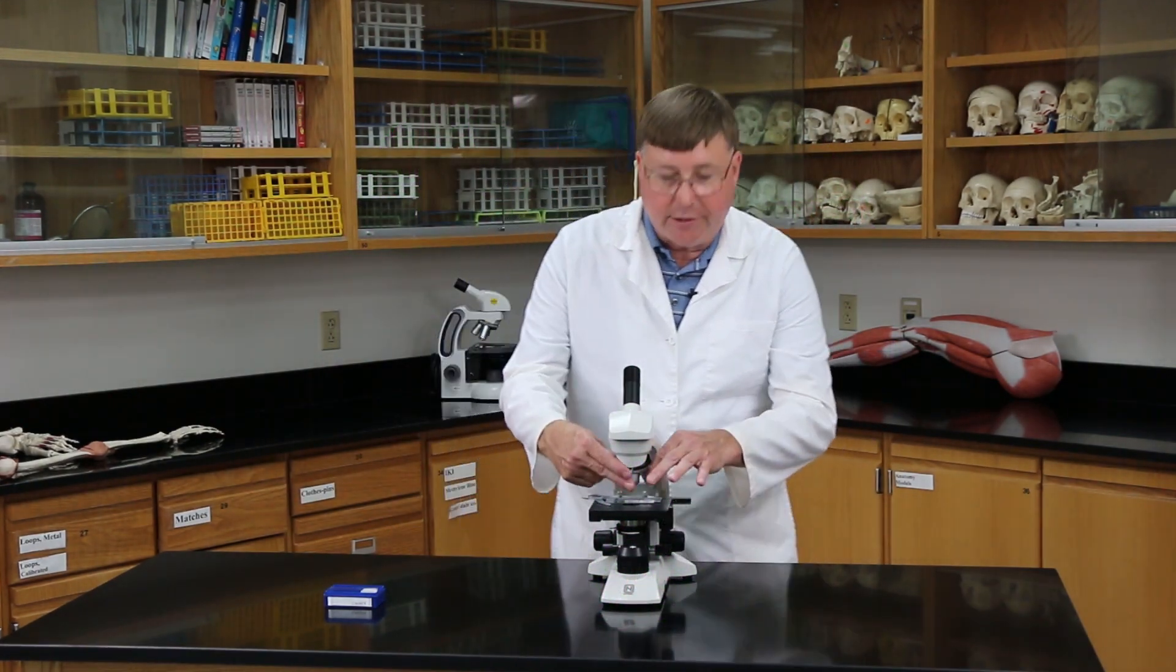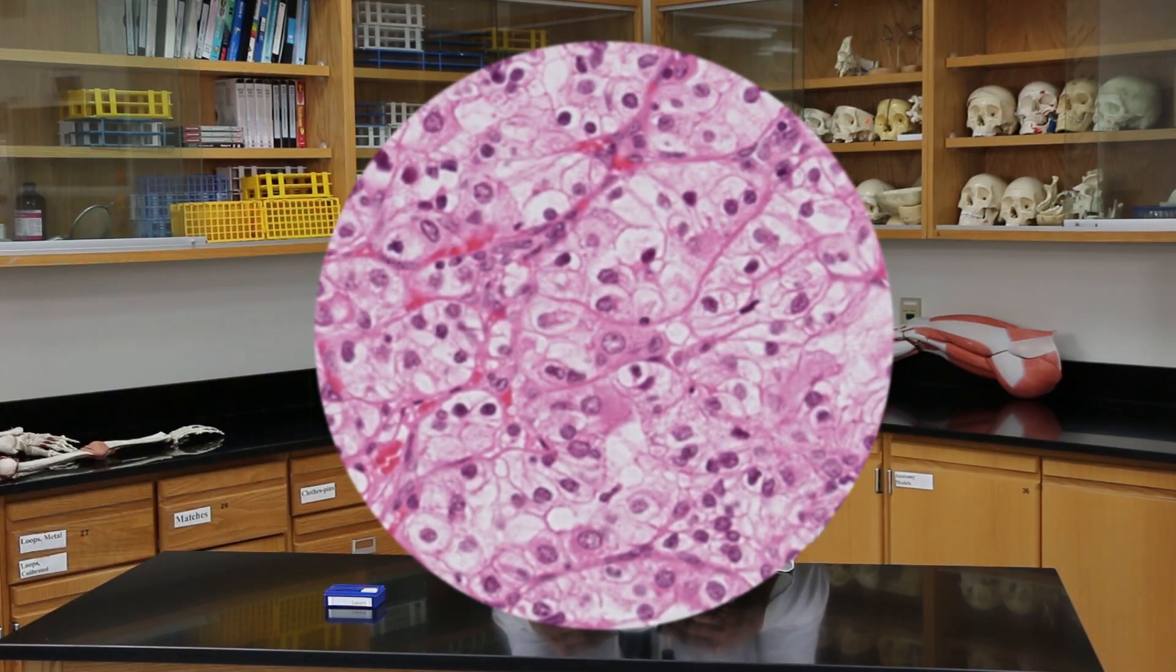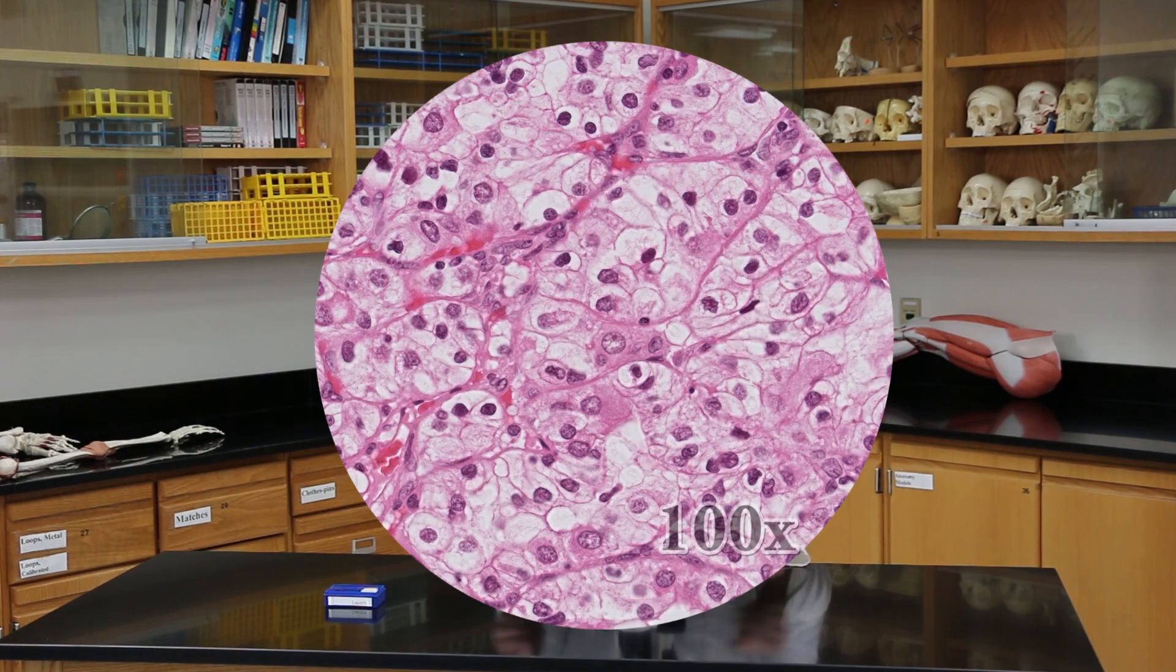Now I move it to the next lens, which is the low power lens, but remember these are parfocal microscopes. So now I use the fine focus adjustment. So I'll turn the fine focus looking in here until it comes into perfect focus. Okay, I've got it in focus.